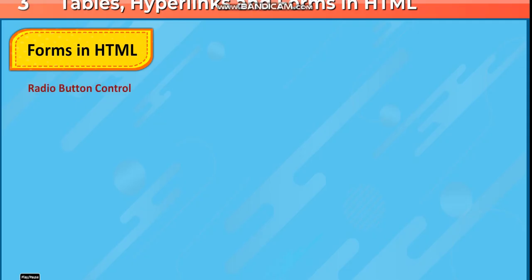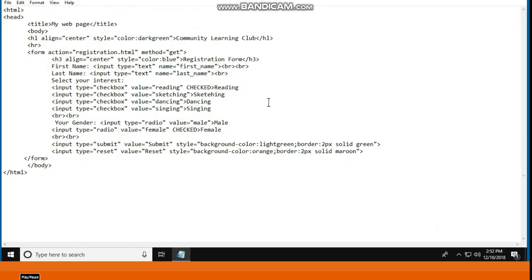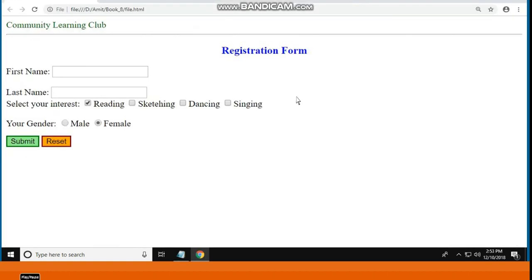Radio button control: Radio buttons are used when only one option is required to be selected. They are created using the input tag. A radio button is a selection control that lets users select any one button among the same group. For example, your gender: male or female.